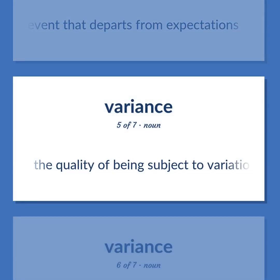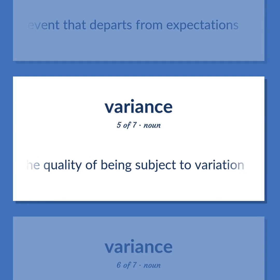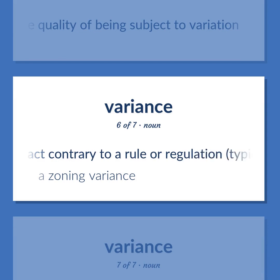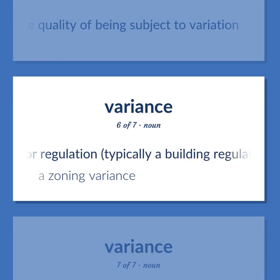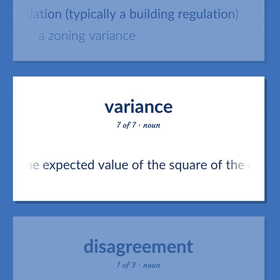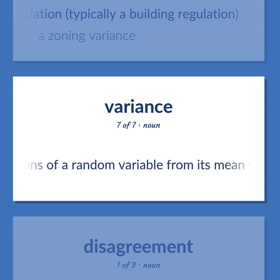The quality of being subject to variation. An official dispensation to act contrary to a rule or regulation, typically a building regulation — for example, a zoning variance. The second moment around the mean: the expected value of the square of the deviations of a random variable from its mean value.